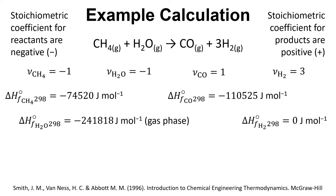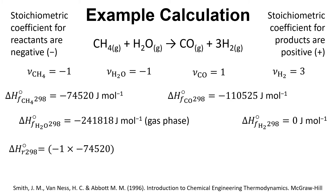We also have values we can look up for the enthalpies of formation for these components, and then we put these into the equation. This is all at 298 Kelvin. For methane, we have minus one multiplied by minus 74,520, and then we continue to add these on for the different components.